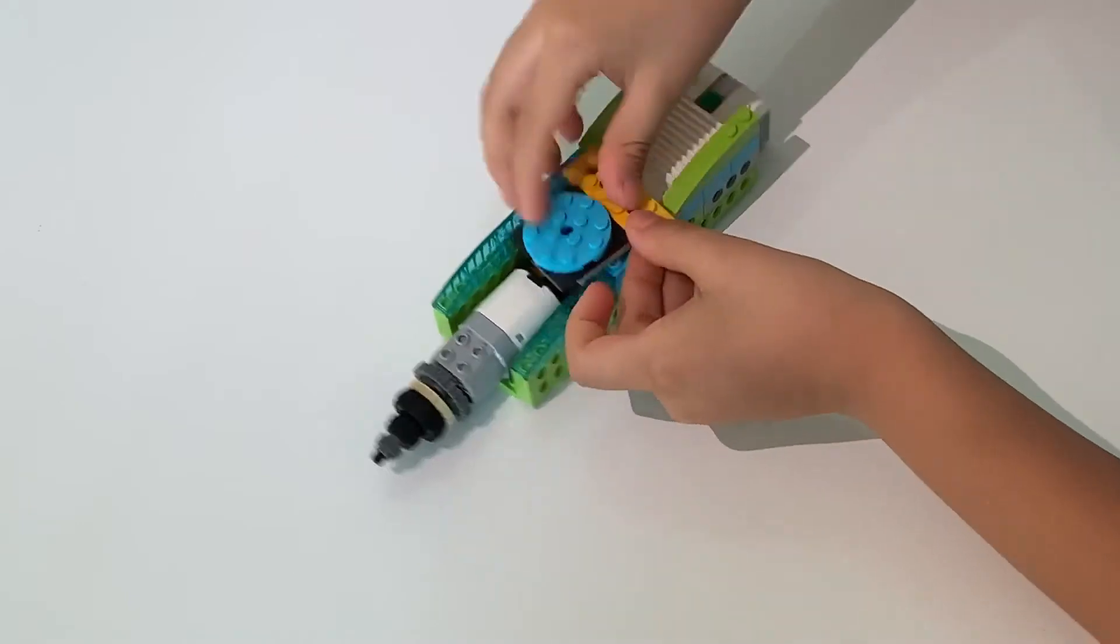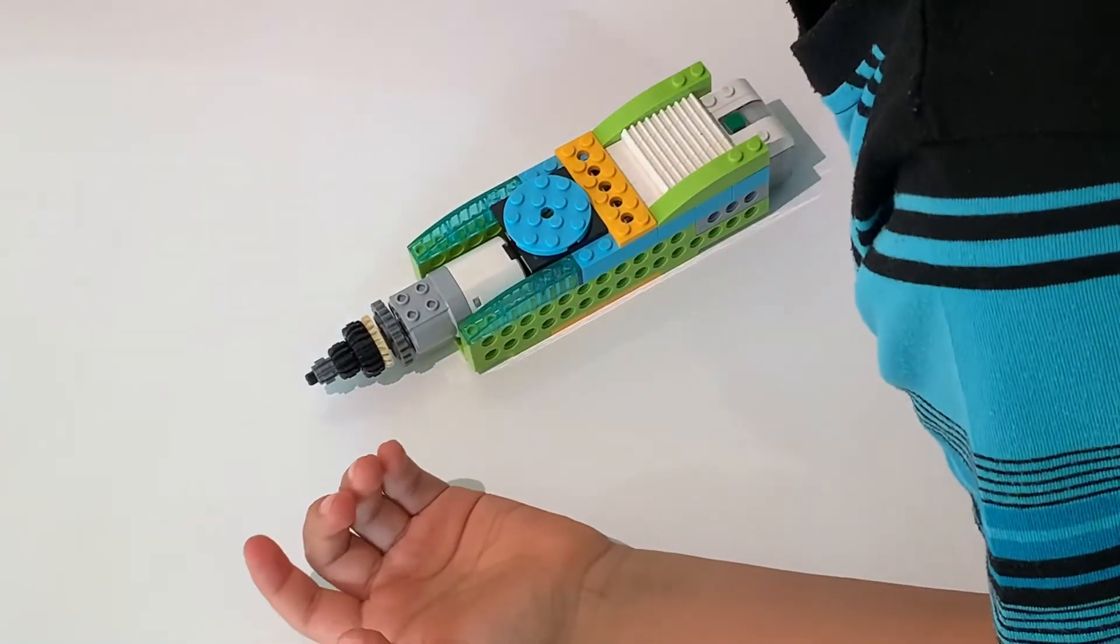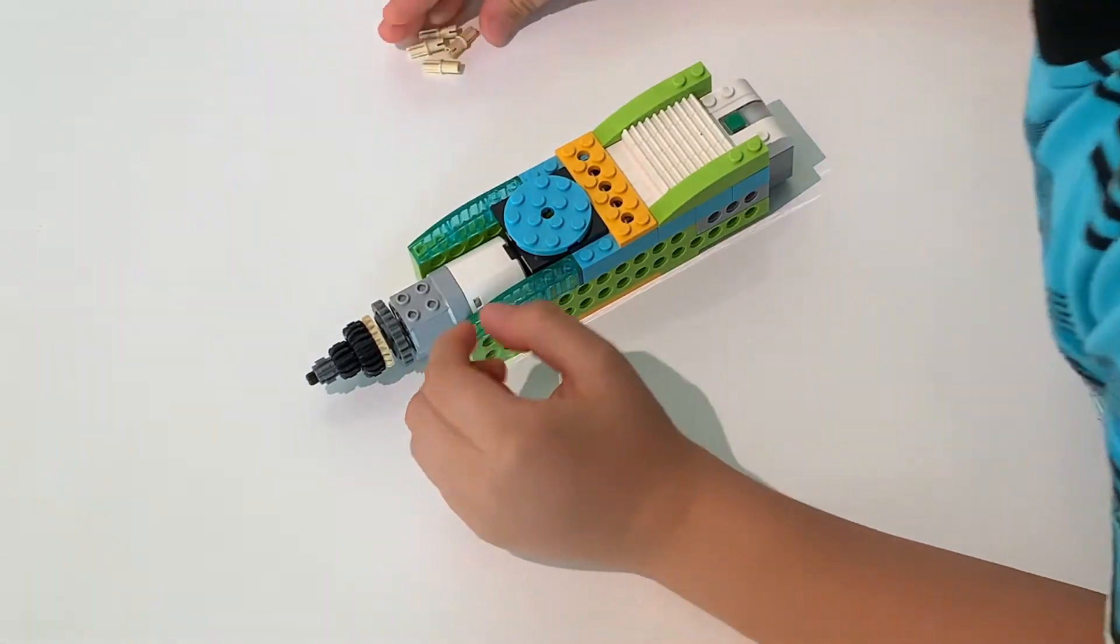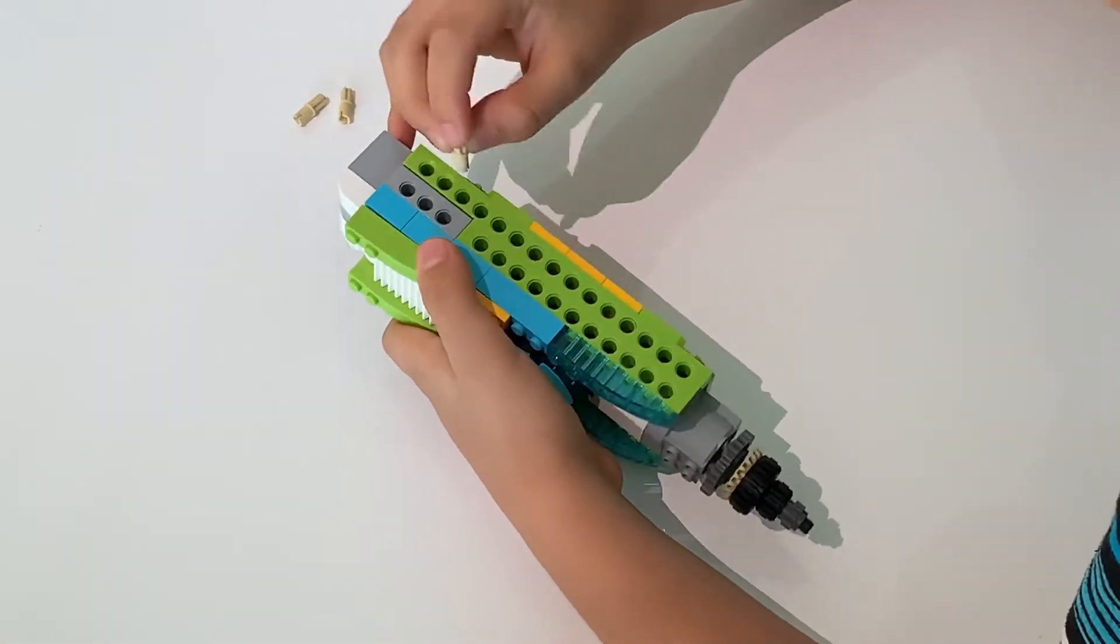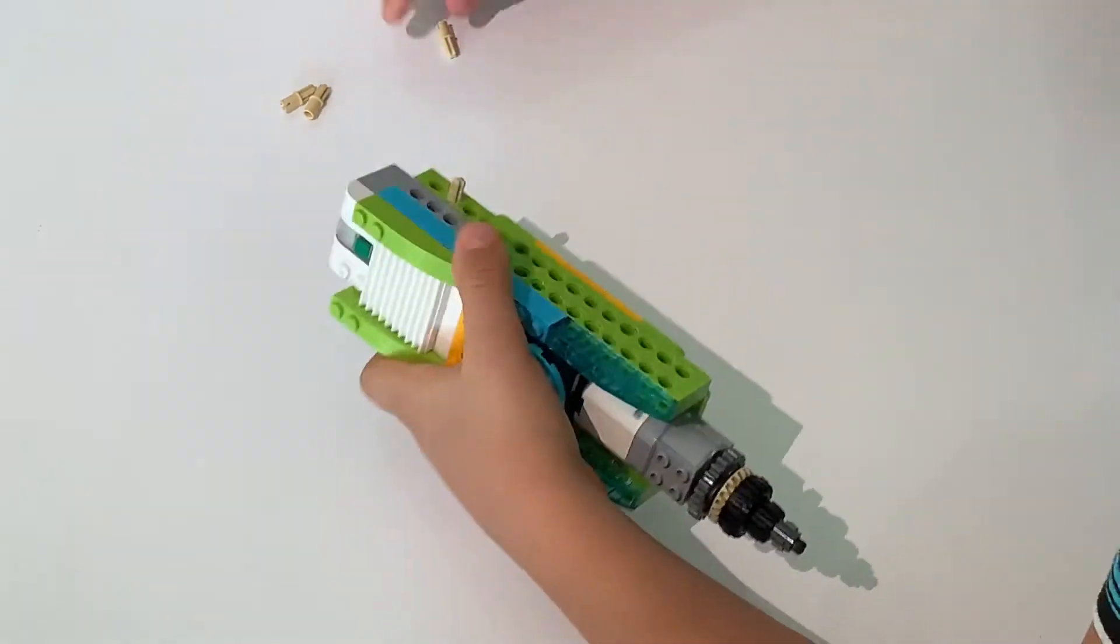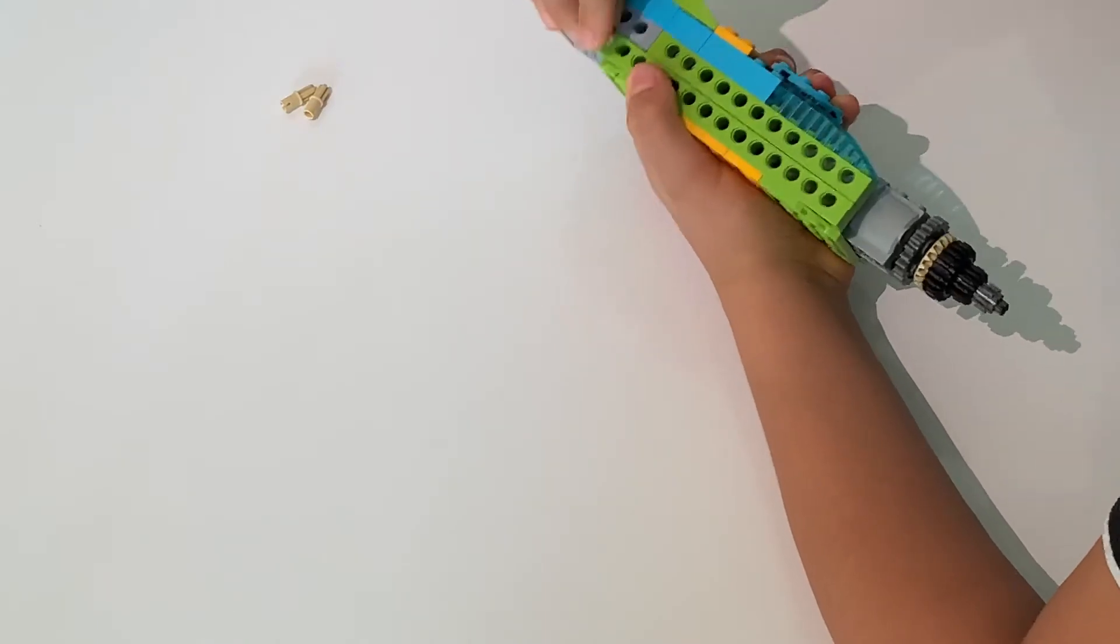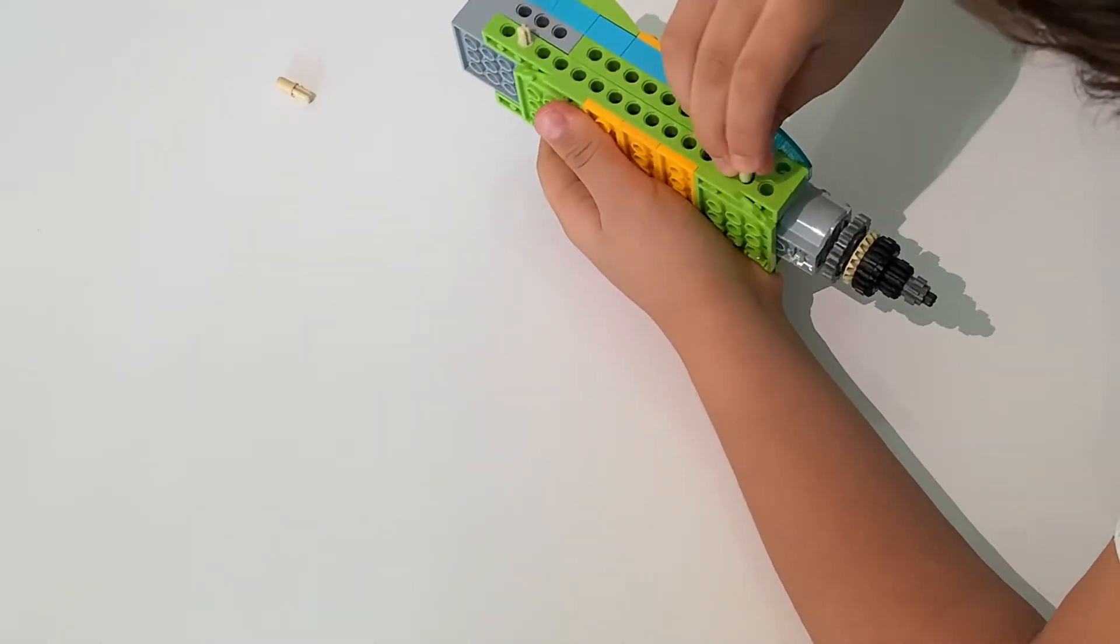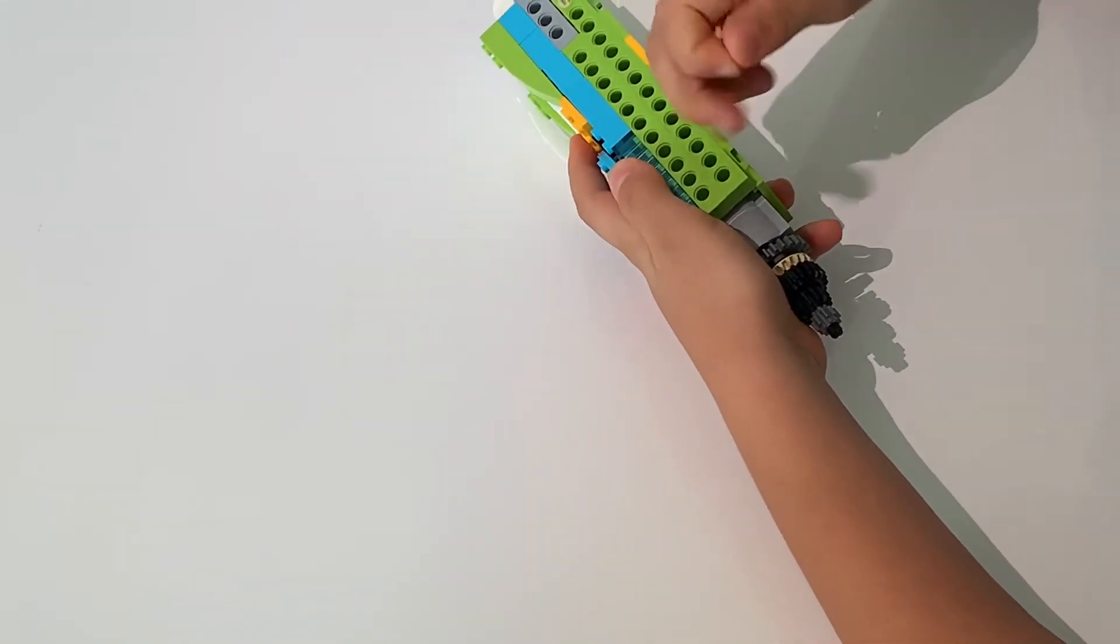And now, we're going to build the wheels. We're going to connect one of these cream pieces here. Another one here. Another one of the cream pieces here. Another one here. And another one here.